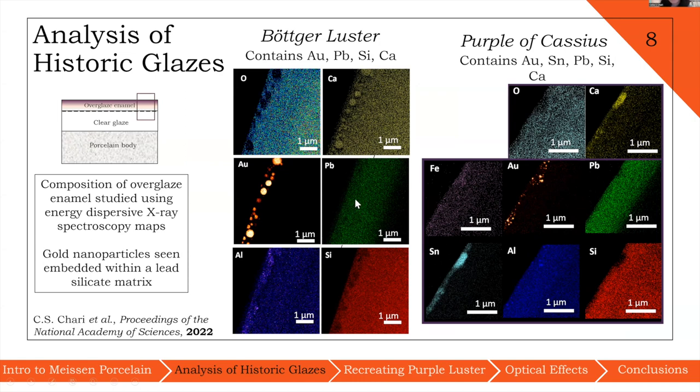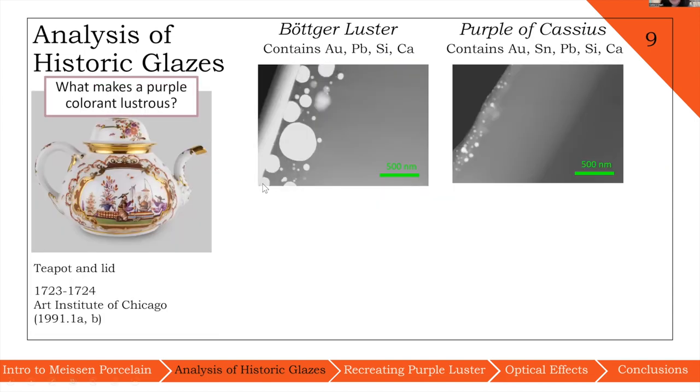To further study the elemental composition of this cross-section sample, we used energy dispersive x-ray spectroscopy to identify that the spheres that we're seeing are actually gold nanoparticles and that they're embedded within a lead silicate matrix. What's really interesting to see is the difference between Böttger luster and purple of Cassius.